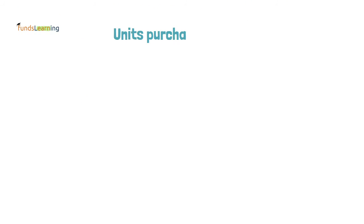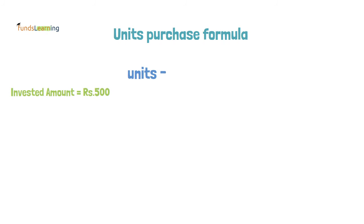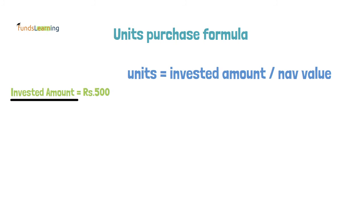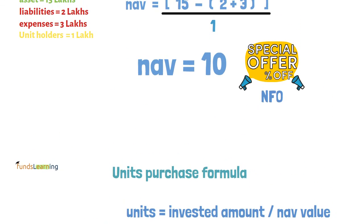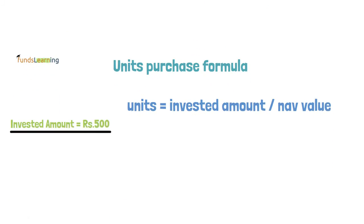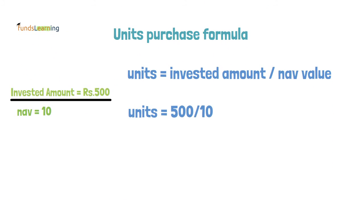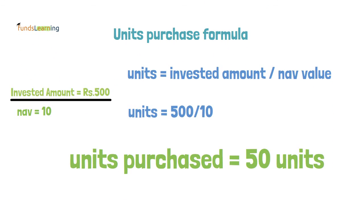Now let's calculate the number of units you will be purchasing when investing through SIP or lump sum. Say for example if you are investing 500 rupees through SIP or lump sum for the current month, your units purchased will be calculated as the invested amount divided by the NAV value. The invested amount is 500 and the NAV value is 10, so the number of units purchased would be 500 divided by 10, which gives you 50 units. This is how the number of units purchased gets calculated based on the mutual fund's NAV value.